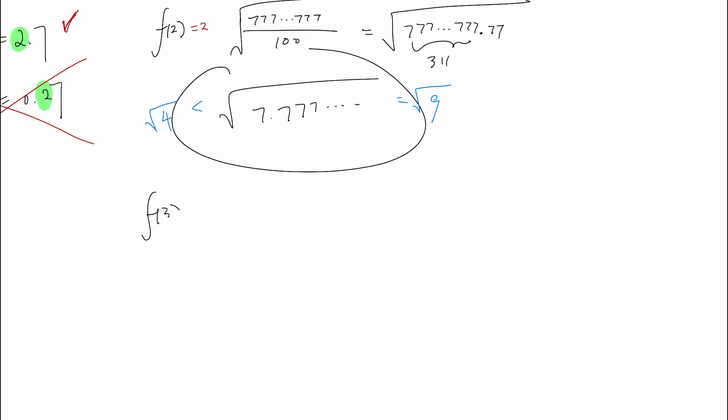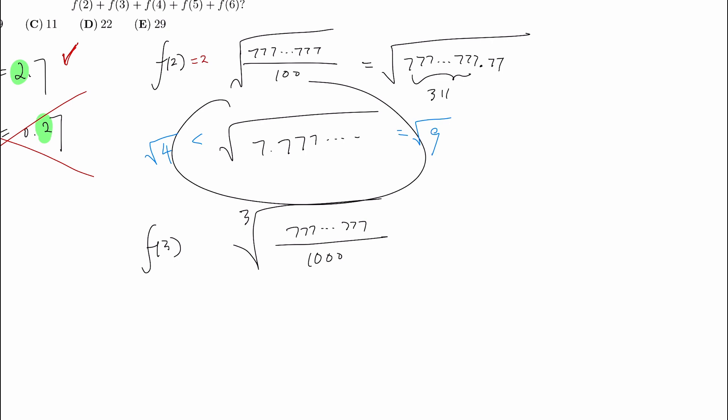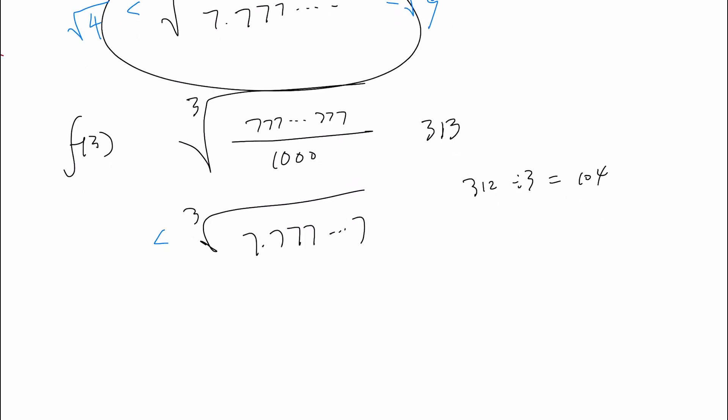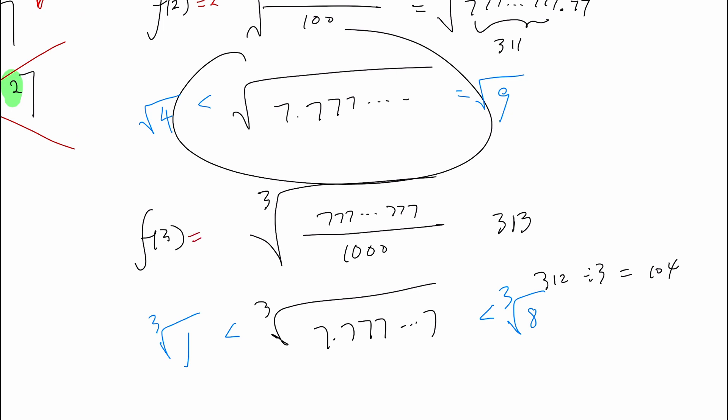Similarly, if we do f(3), then we do the cube root of 777...777 divided by 1000. Because if we have the cube root, if we put 10 inside of a cube root, it becomes dividing by 1000. Each time we're moving the decimal point forward by 3 decimal points. We initially start with 313 of those, so we would end up with just 1, so 7.777... We divide by 10 104 times, and this number is going to be between the cube root of 1 and the cube root of 8, which means that the leading digit of the cube root is going to be 1.